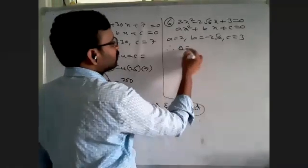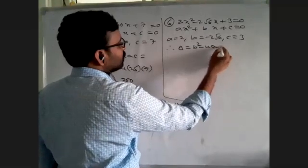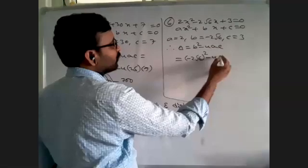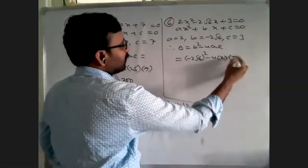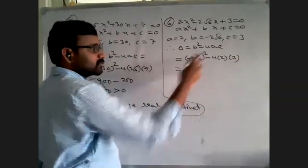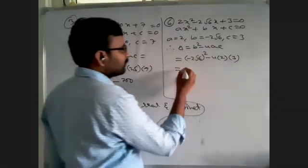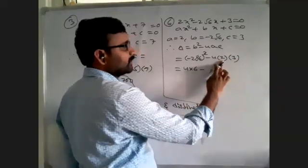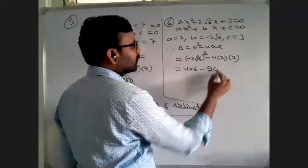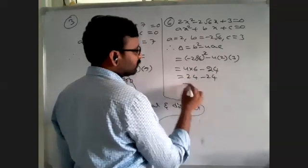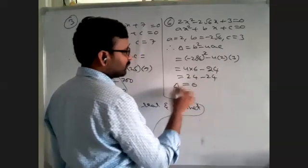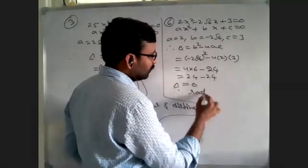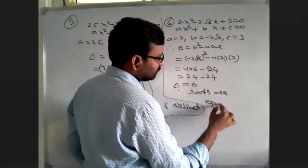The discriminant Δ = B² - 4AC = (-2√6)² - 4×2×3 = 4×6 - 24 = 24 - 24 = 0. So Delta is equal to 0.